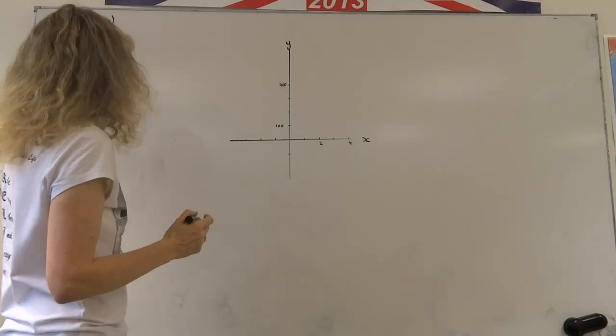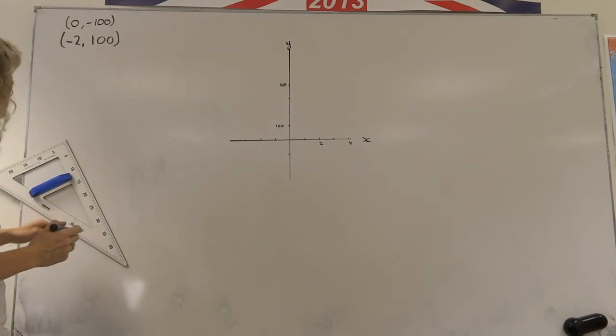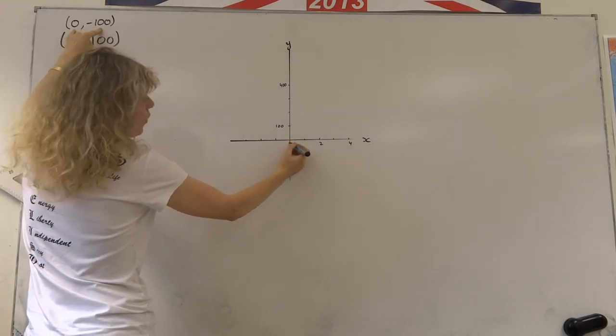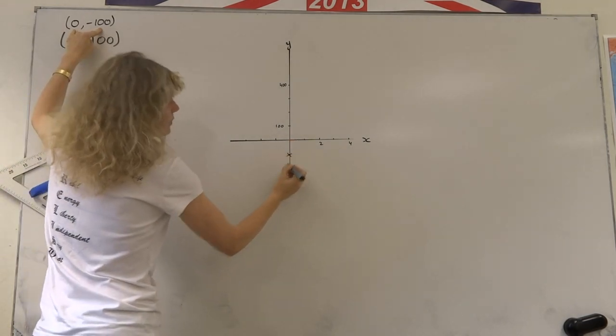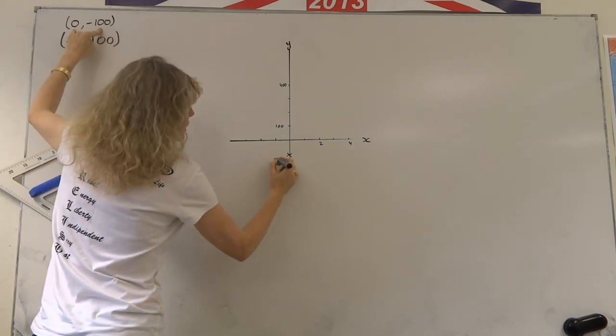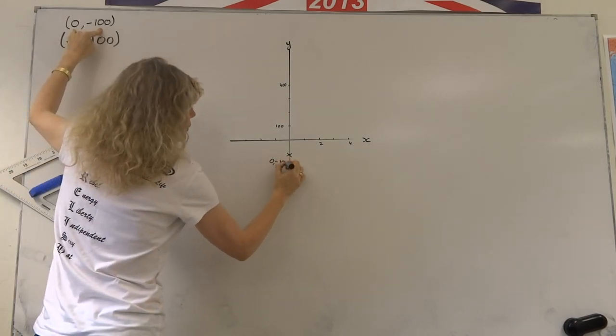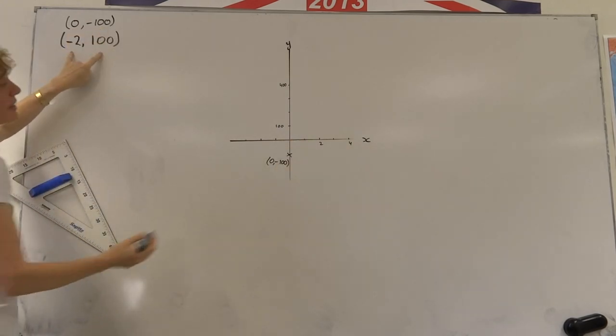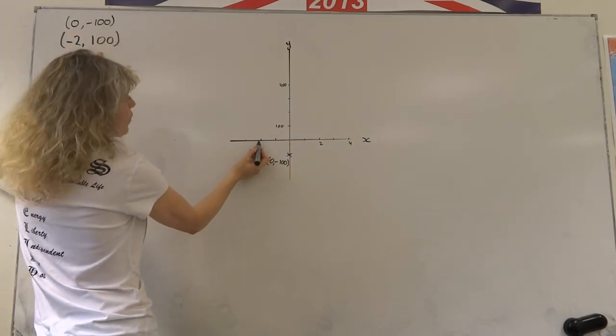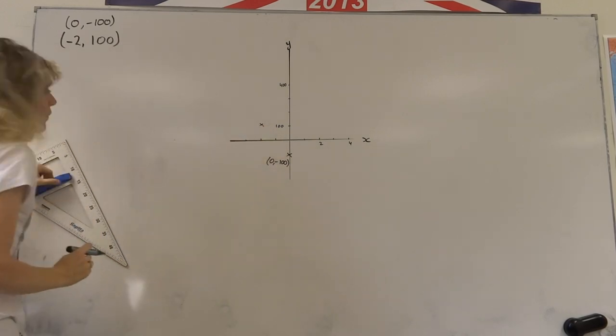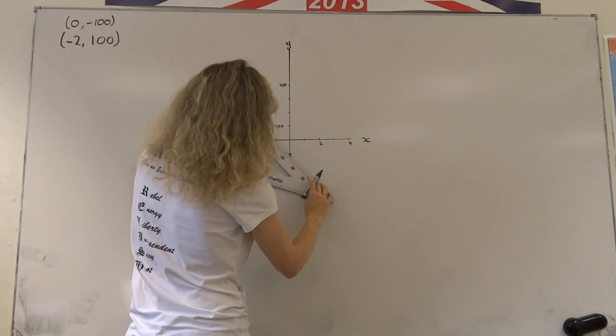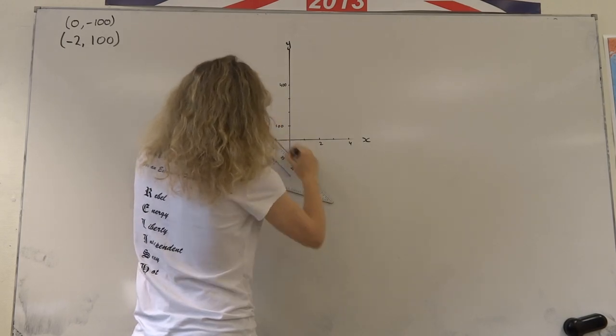Let's find the equation of a line where we have two coordinates given. The first coordinate is x equals 0, y equals minus 100, that will be here 0 minus 100. And where we have x equals minus 2 and y equals 100.